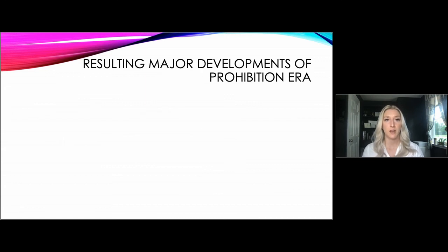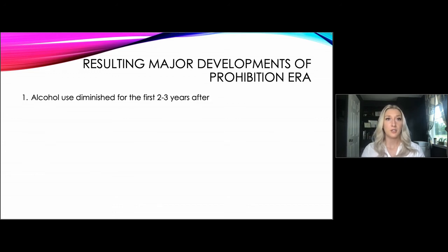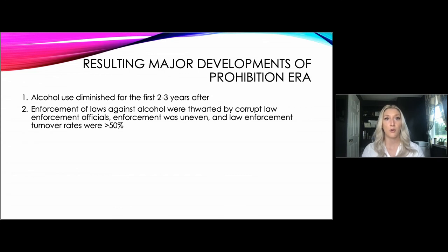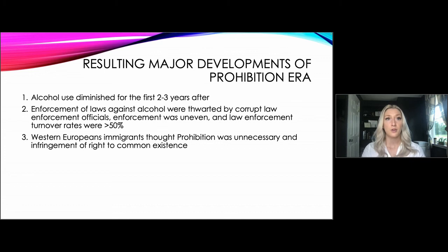The major developments out of the prohibition era: alcohol use diminished for the first two to three years after prohibition began. Enforcement of laws against alcohol was thwarted by corrupt law enforcement officials, with enforcement being uneven and law enforcement turnover rates greater than 50%. Western European immigrants thought prohibition was unnecessary and an infringement of their right to common existence, as alcohol was part of their culture — immigrants would even cook alcohol in bathtubs to sell it illegally.